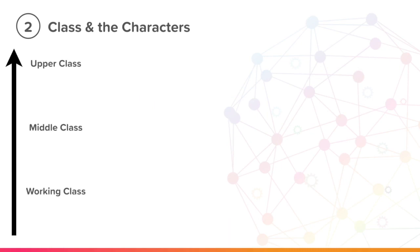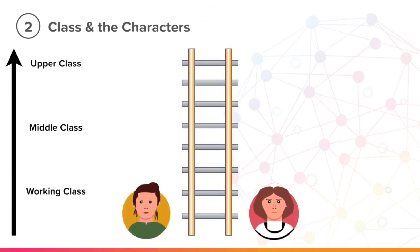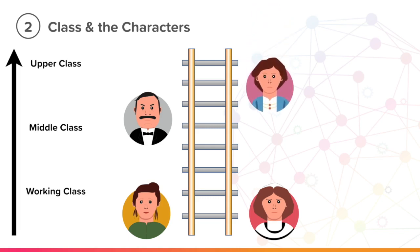Let's have a look at the classes of our characters. At the bottom of the social ladder, we have our two working class characters, Eva and Edna. Because they are at the bottom of the ladder, they enjoy fewer luxuries and are treated poorly in comparison to the other characters. In the middle of the ladder is Arthur. He could be described as middle class. He has had a successful business, but his wife is his social superior.